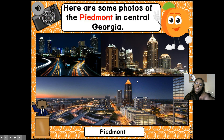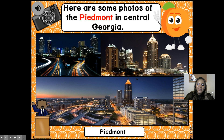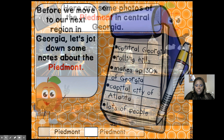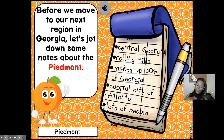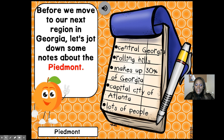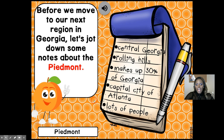So here are some photos of the Piedmont in Central Georgia, and there's our downtown Atlanta. Just to recap before we move on: Central Georgia, Piedmont, Rolling Hills, 30% of Georgia, capital city of Atlanta, and there are lots of people. Look, they're taking notes — good job.